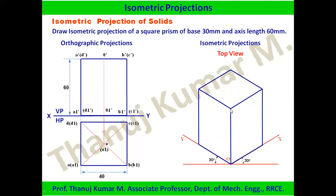Hidden lines — lines not visible to our eyes in the isometric view — must be removed from the final drawing. You may draw them first during construction and then erase them; there is no harm in doing so and you will still get full marks. The most important requirement is that the drawing is to the correct isometric scale.